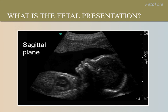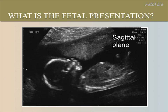This is a sagittal view of the uterus. What is the fetal lie and presentation and why? This is a cephalic presentation and longitudinal lie because the mother's feet are to the right of the image and her head is to the left, so the fetal head is closest to the cervix. In the next image, the fetal buttocks are closest to the cervix, which is to the right of the image, and the fetal head is toward the mother's head, which is to the left of the image.